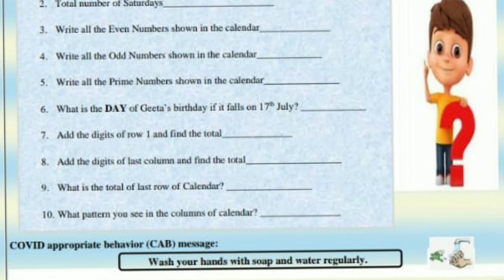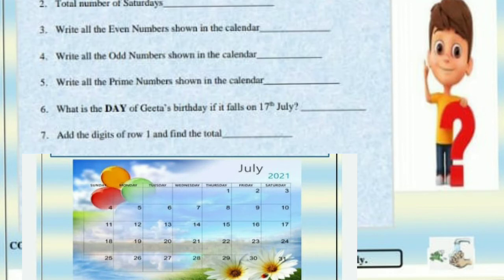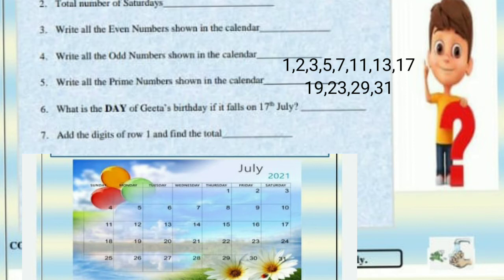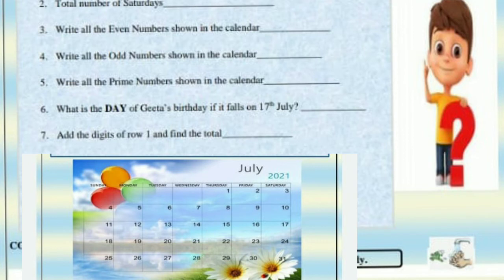Fifth: write all the prime numbers shown in the calendar. See all the prime numbers in the calendar: 2, 3, 5, 7, 11, 13, 17, 19, 23, 29, and 31 are prime numbers.